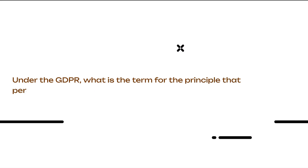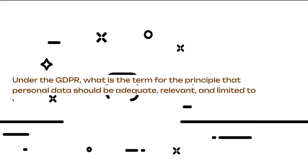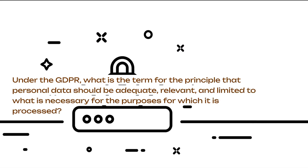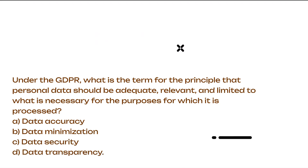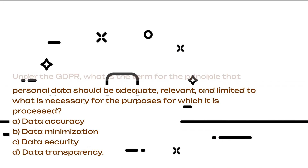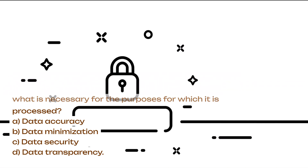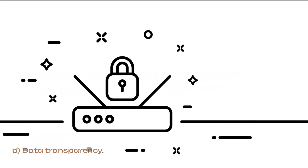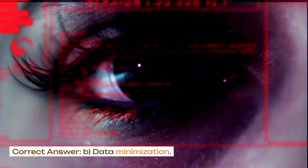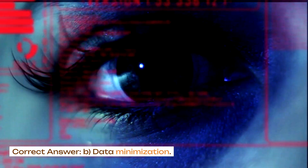Under the GDPR, what is the term for the principle that personal data should be adequate, relevant, and limited to what is necessary for the purposes for which it is processed? A. Data accuracy. B. Data minimization. C. Data security. D. Data transparency. Correct answer: B. Data minimization.